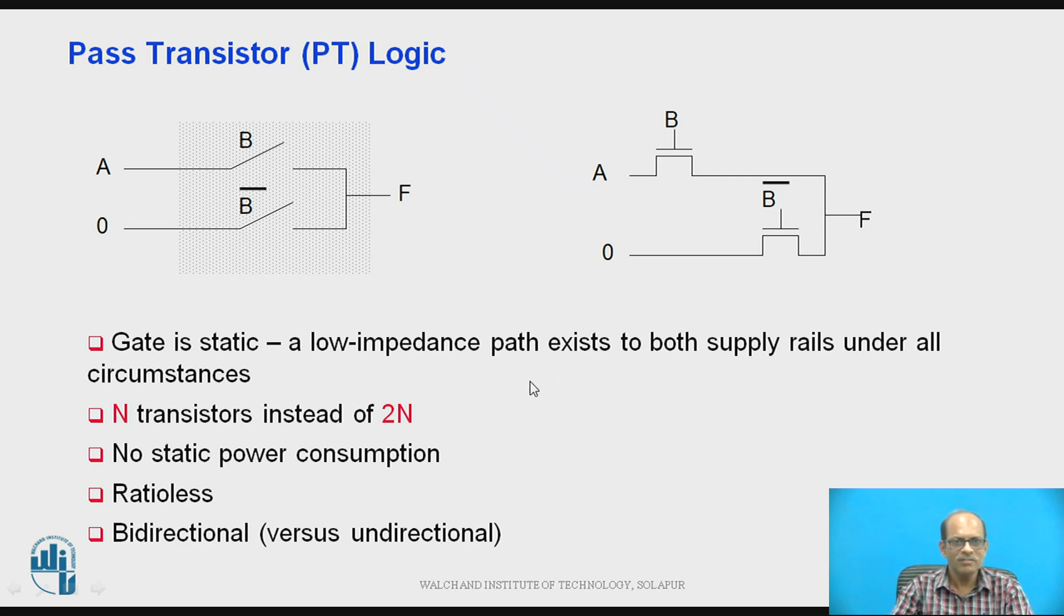Now let us understand what is a pass transistor logic. So for the pass transistor logic, here two NMOS are connected as shown in the figure. Input to the gate are B and B bar and these inputs are A and 0. So let us obtain what is F. So F is equal to AB. So this is the AND gate. So the basic objective of the pass transistor logic is to reduce the number of transistors as compared to complementary CMOS.